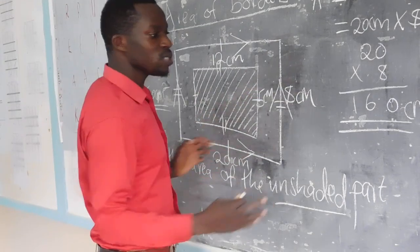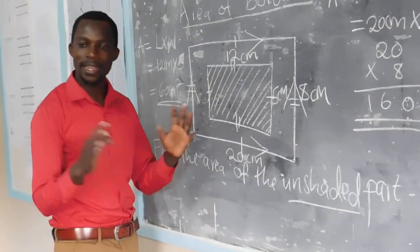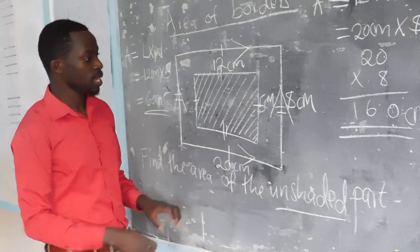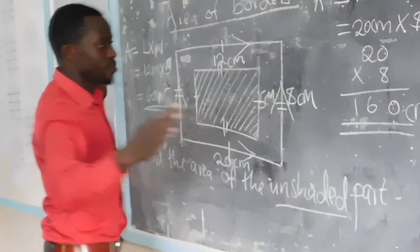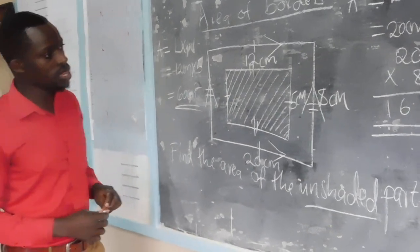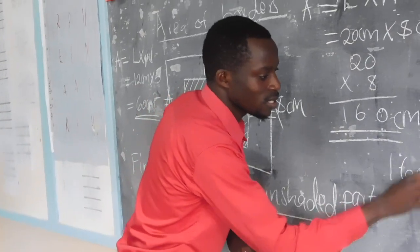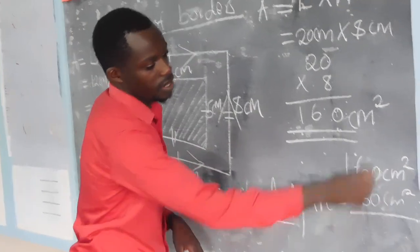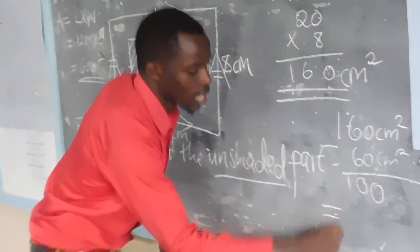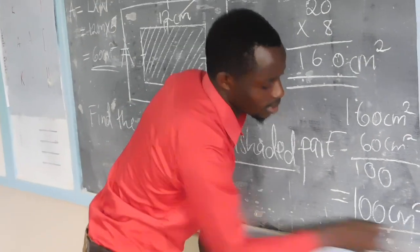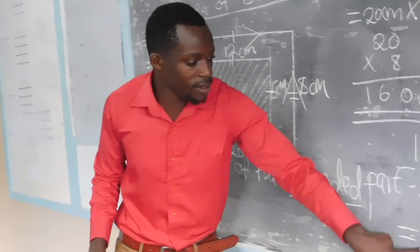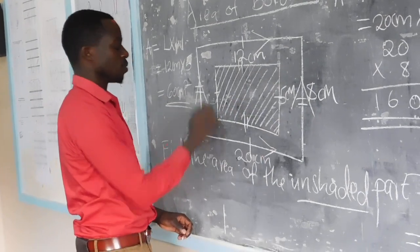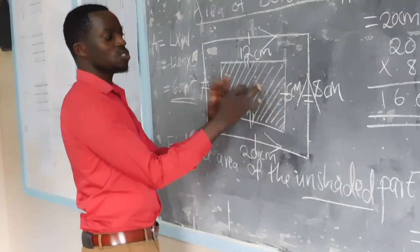The area of the outer rectangle is 160 square centimeters. We are looking at the area of the border, so we find the difference between the bigger and the smaller rectangle: 160 square centimeters minus 60 square centimeters. The difference is 100 square centimeters. This 100 square centimeters is the area of the unshaded part — the border.